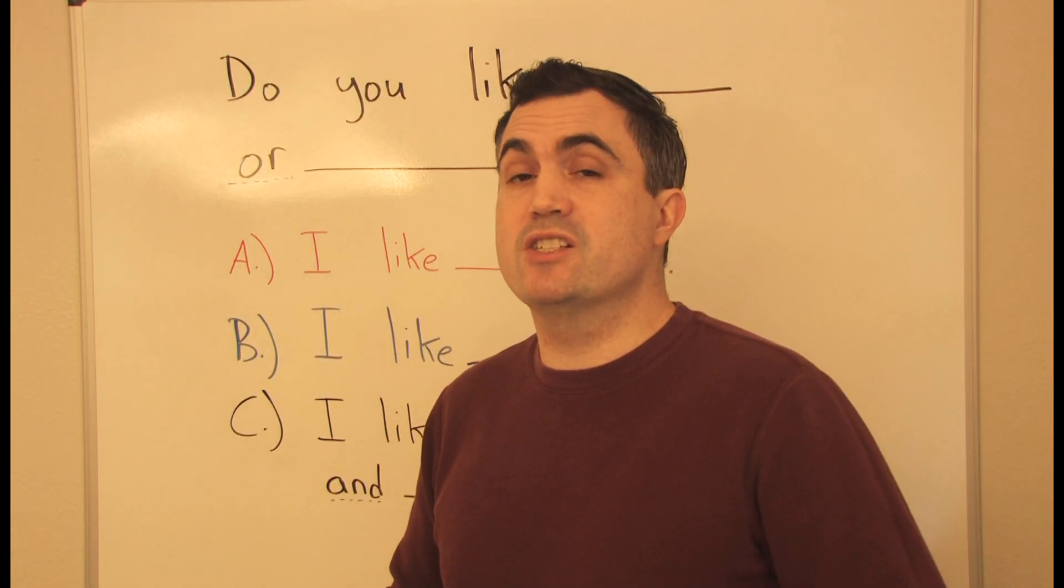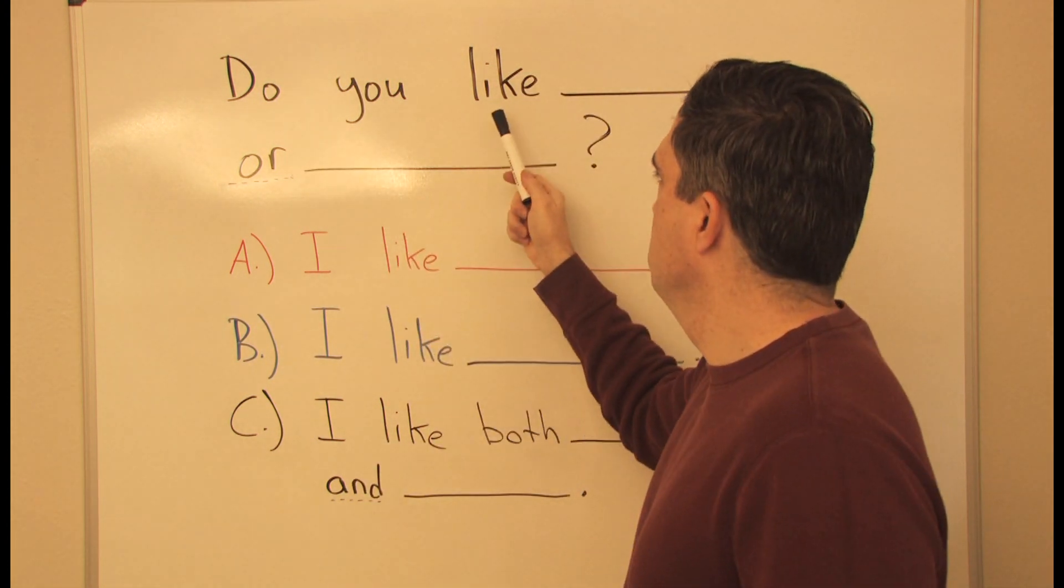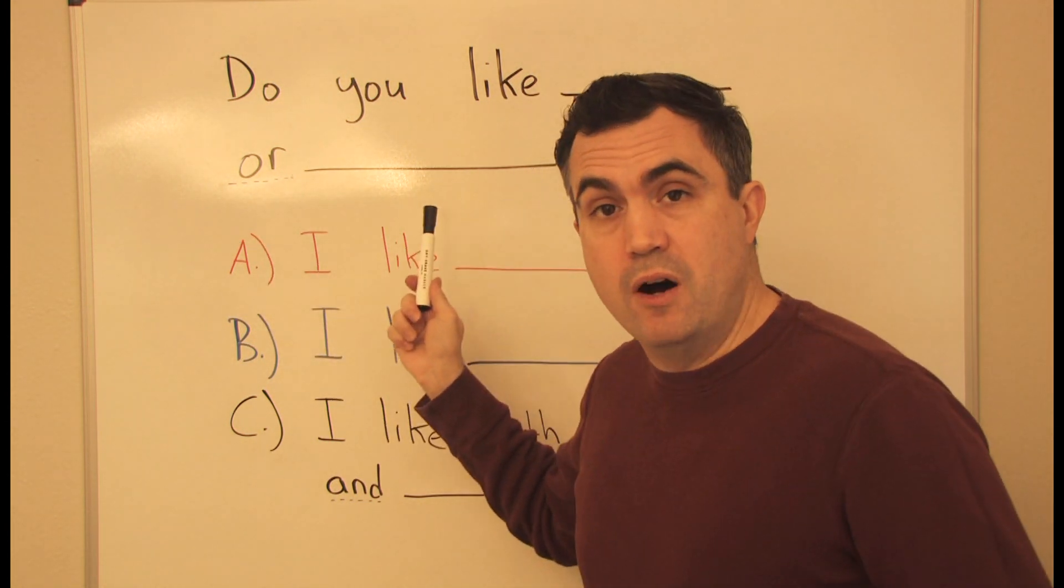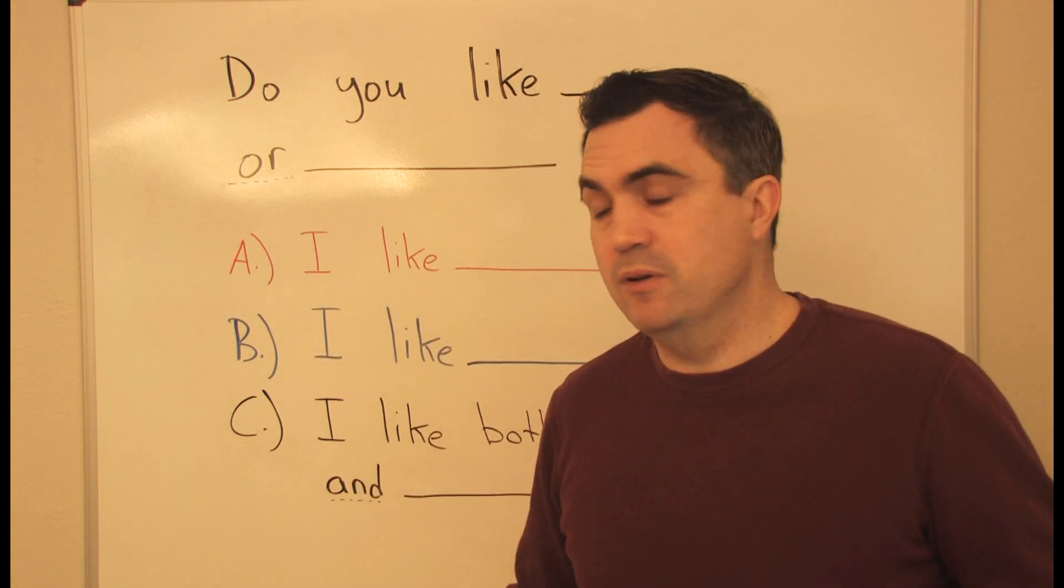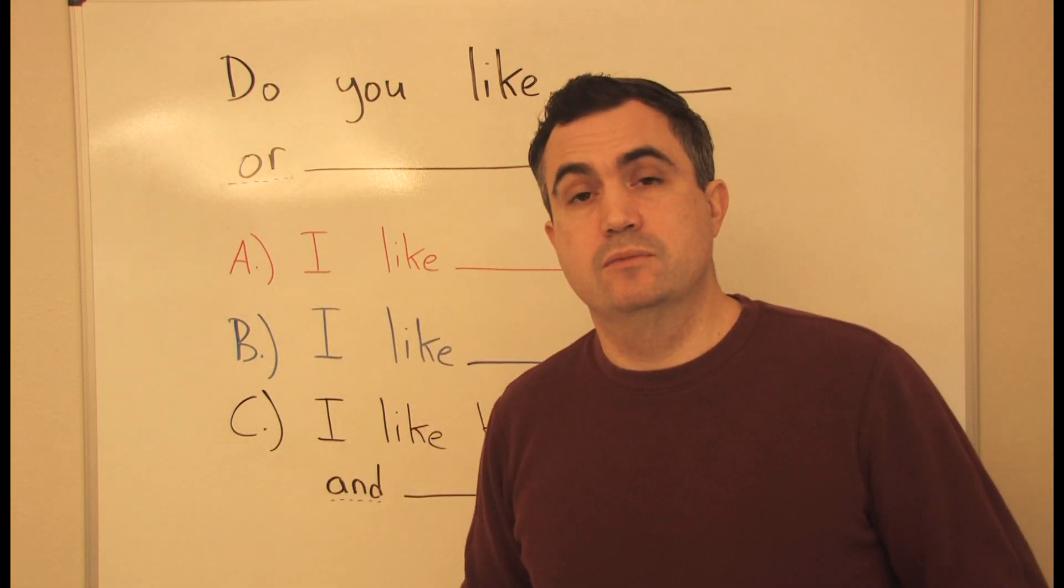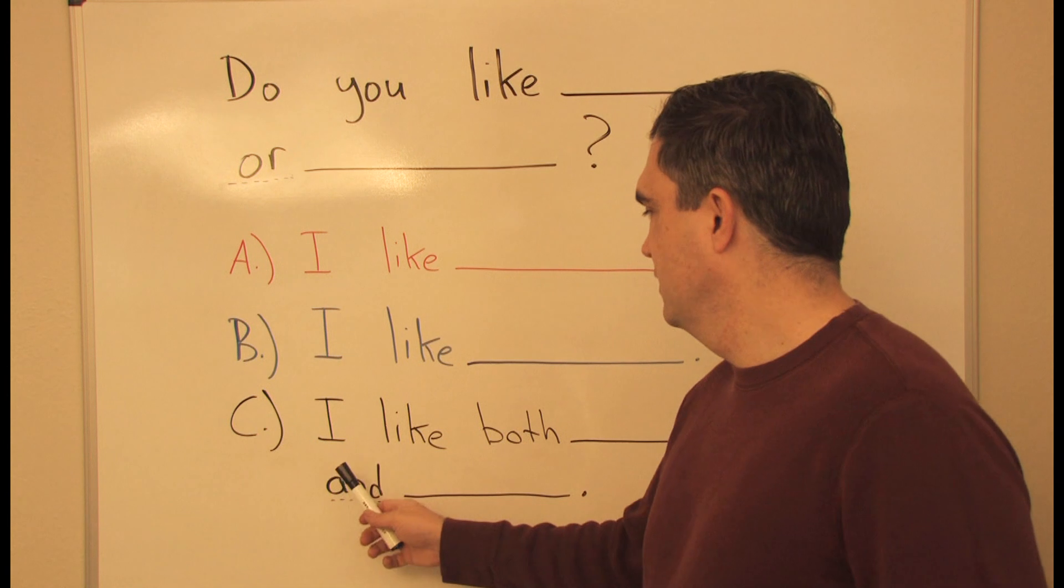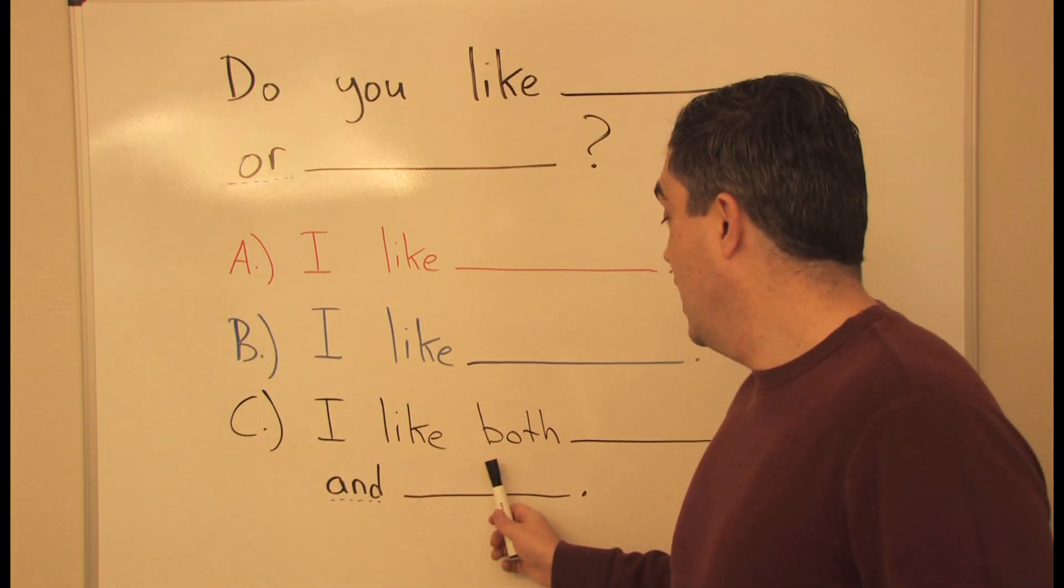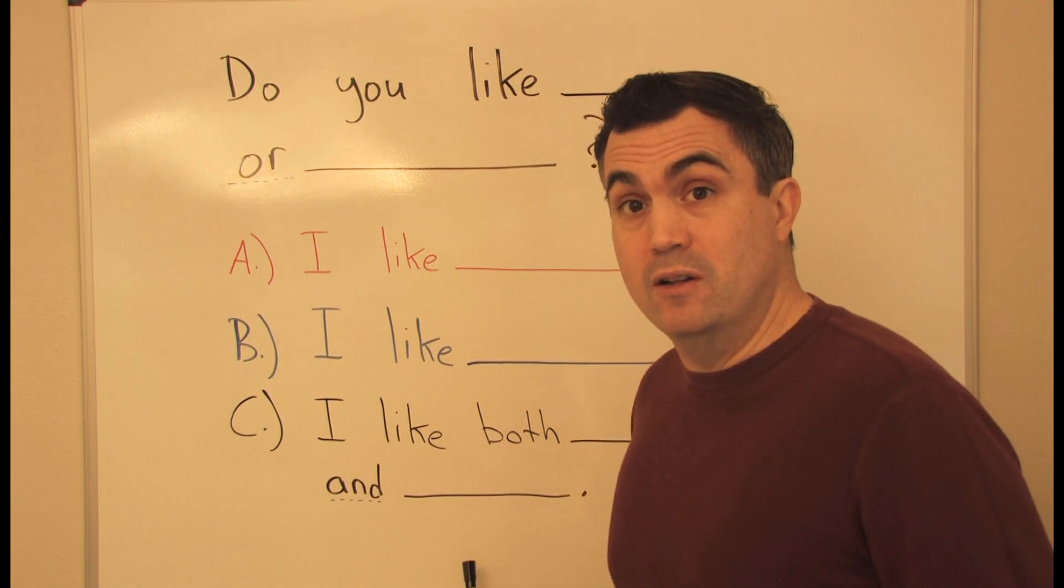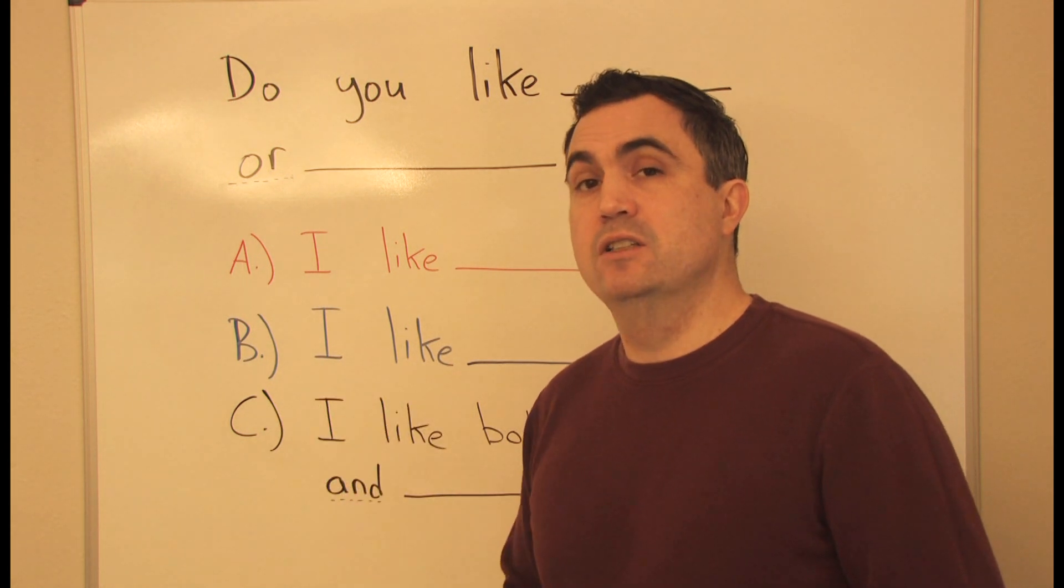Here's a simple speaking practice you can do. Do you like baseball or football, for example? Your partner can say, I like baseball. Or, I like football. Or, I like both baseball and football. So it's a little practice using or or and.